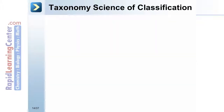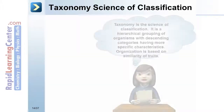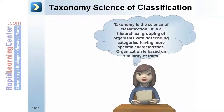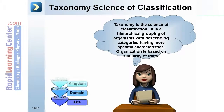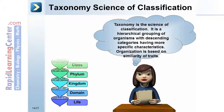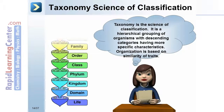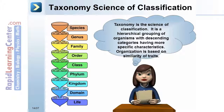Taxonomy is the science of classification. It is a hierarchical grouping of organisms with descending categories having more specific characteristics, and organization is based on similarity of traits.